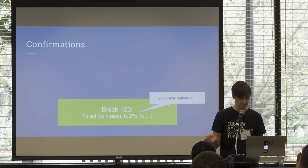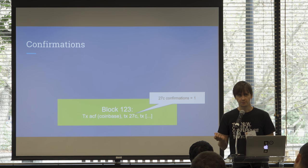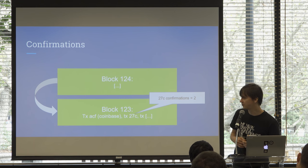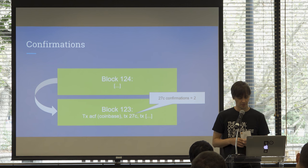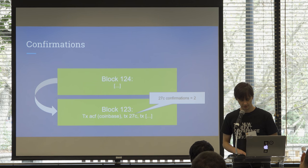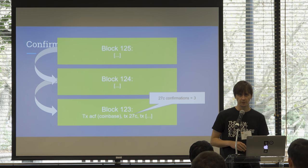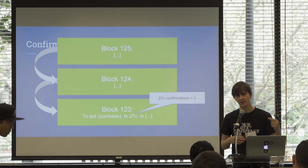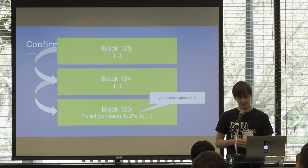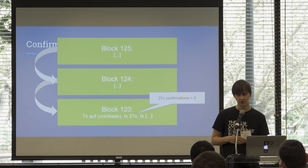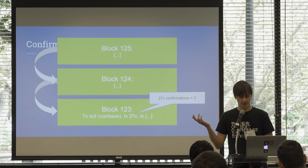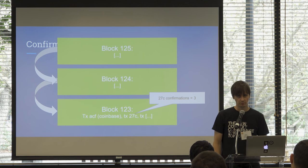An unconfirmed transaction is dangerous and should be ignored. As someone builds on top of the block that has our transaction, we get two confirmations, because now we have two blocks protecting our transaction. As more blocks are added by miners, the confirmation count goes up. Generally speaking, we want about six confirmations before we can consider our transaction final. Before that, it could vanish.